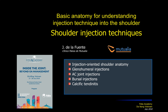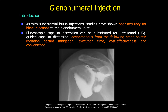Let's discuss the basic anatomy for understanding injection technique into the shoulder, covering glenohumeral injections, AC joint injections, bursal injections, and ultrasound-guided treatment of calcific tendonitis. Blind injections have poor accuracy for the glenohumeral joint, while ultrasound guidance offers clear advantages: mitigation of radiation exposure, faster execution time, cost effectiveness, and greater convenience for both physician and patient.